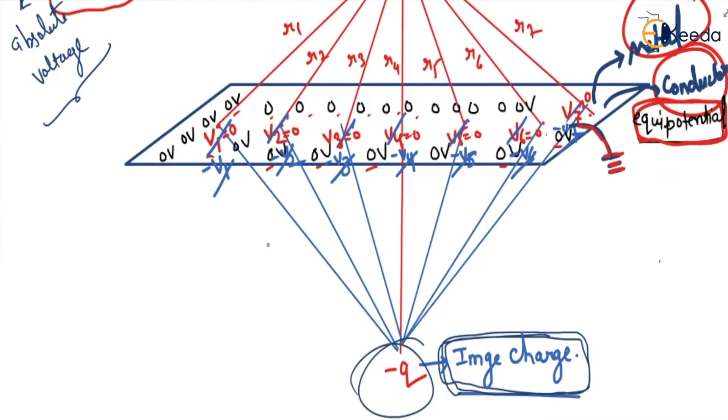So this minus q charge will cancel all the potentials which are generated by plus q charge, but it should be on the same height, same magnitude. It should be below conductor but opposite polarity, and this is called as image charge. And this theory is called as image theory.